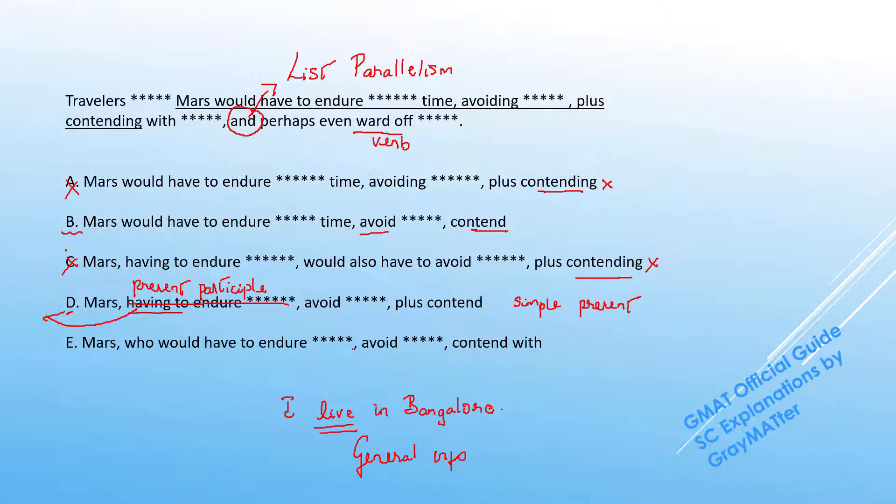So if I use the same concept and look at this sentence, am I trying to present general information that travelers to Mars generally do this, that they generally avoid, generally contend, and generally even ward off something? It's not the case, because we don't have travelers to Mars yet.